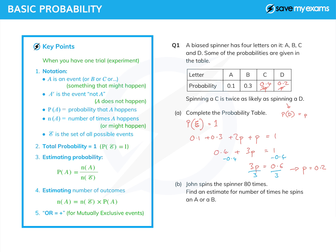Now we have John spinning the spinner, and he does it 80 times. And we're asked to find an estimate for the number of times he spins an A or a B. Now that word or should immediately make us think of plus. And we're also estimating the number of outcomes, so we need to use this formula here.